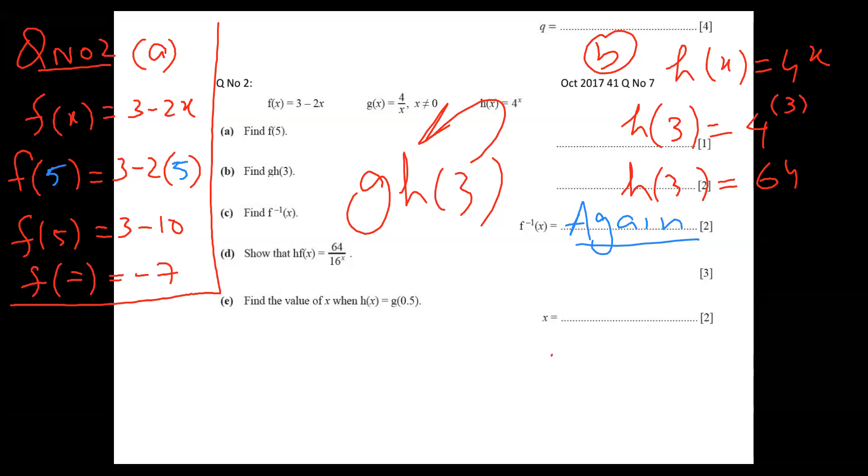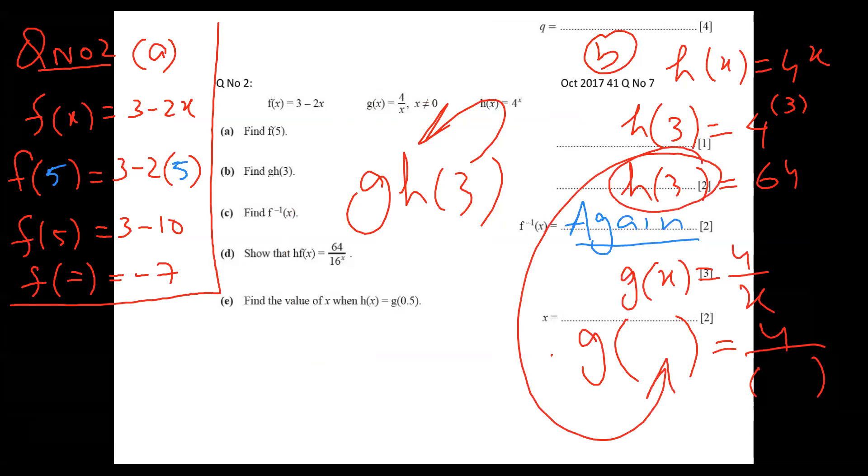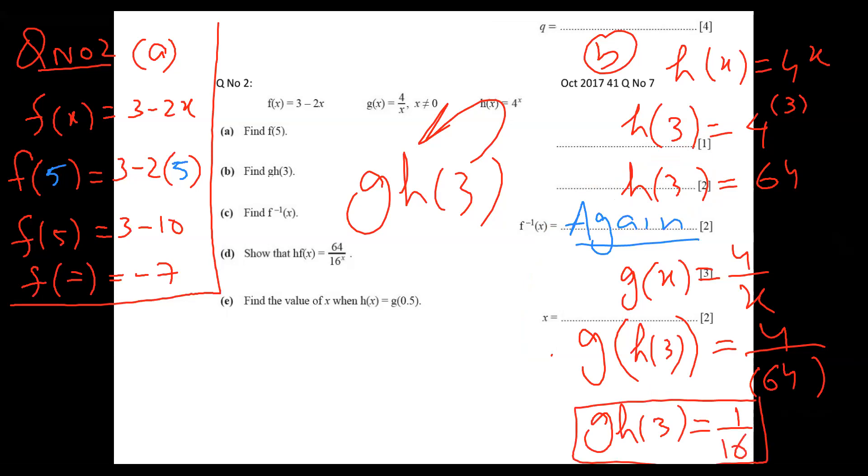And now this value of H of three, I'm going to put in G. So first of all, I will copy G function here. So G of X is four over X. And now how many X's you have empty spaces? So this H of three, I'll put here. And this 64, I will put here. H of three comes here and function name comes here and function value comes here. 64 comes here. So G H of three is coming four over 64, four divided by 64 is one sixteenth. So this is my answer of part number two.